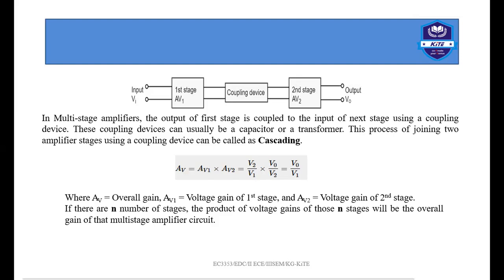The total voltage gain is the product of the individual voltage gains. For a two-stage amplifier, the overall voltage gain is AV = AV1 × AV2, where V2/V1 is the gain of the first stage and V0/V2 is the gain of the second stage. AV represents the overall gain, AV1 is the voltage gain of the first stage, and AV2 is the gain of the second stage. For n stages, the product of all n individual stage voltage gains gives the overall multi-stage amplifier gain.